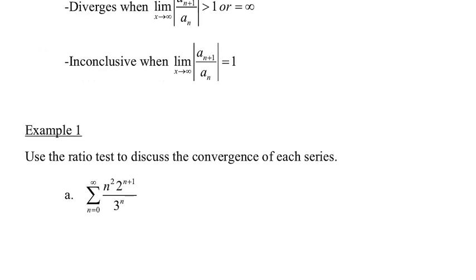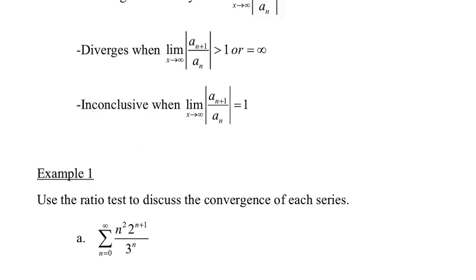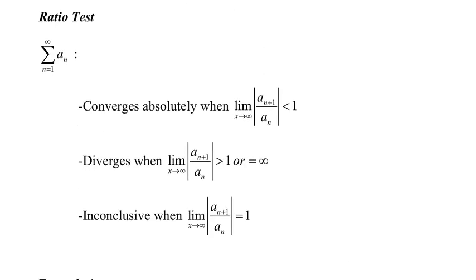Notice the directions in the first one — it just says 'discuss the convergence.' I'm not looking for conditional or absolute convergence unless I specifically state: 'determine if the series is conditionally convergent, absolutely convergent, or divergent.' So unless those are the directions, we are not specifically looking for those things.